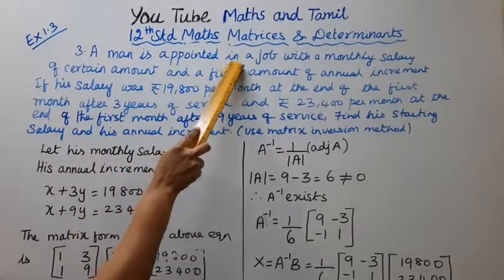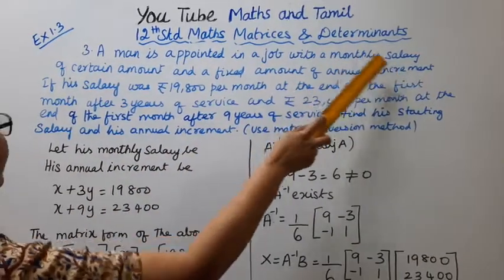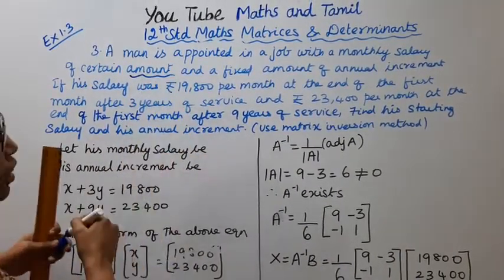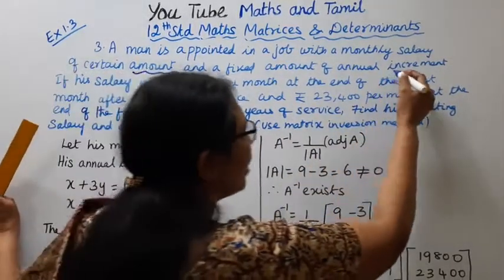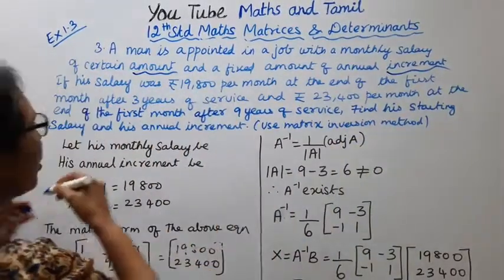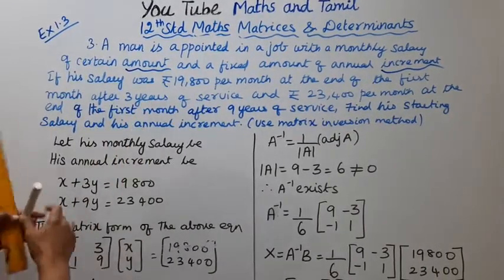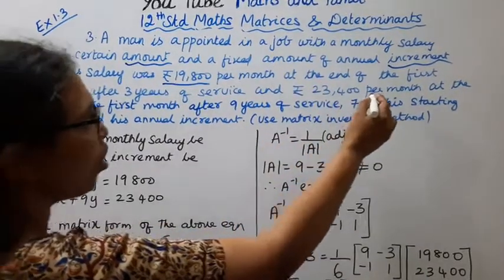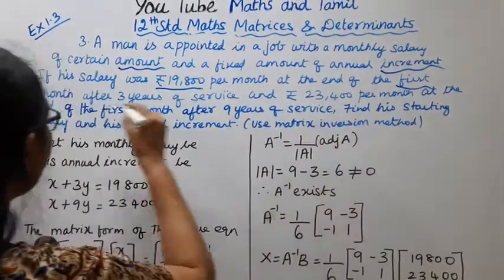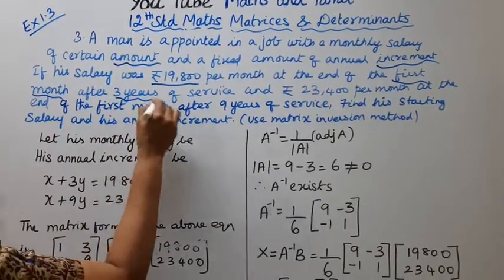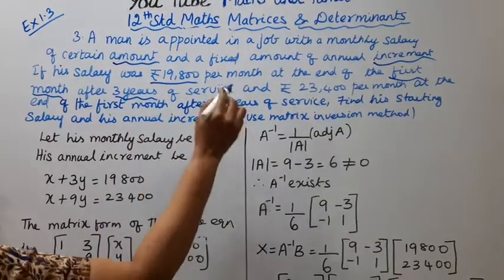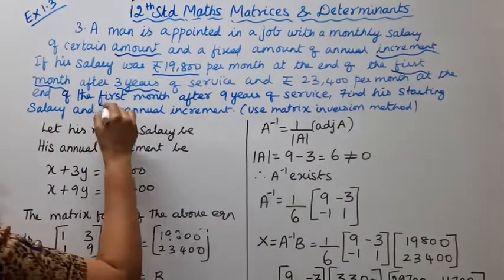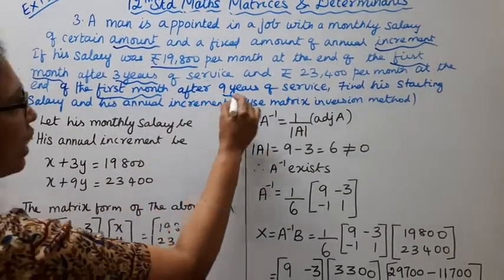A man is appointed in a job with a monthly salary of a certain amount and a fixed amount of annual increment. If his salary was Rs. 19,800 per month at the end of the first month after 3 years of service and Rs. 23,400 per month at the end of the first month after 9 years of service.